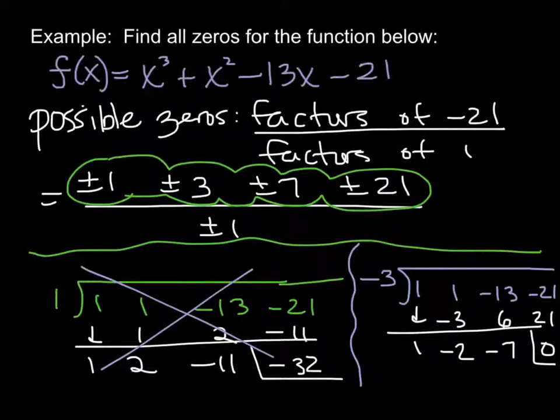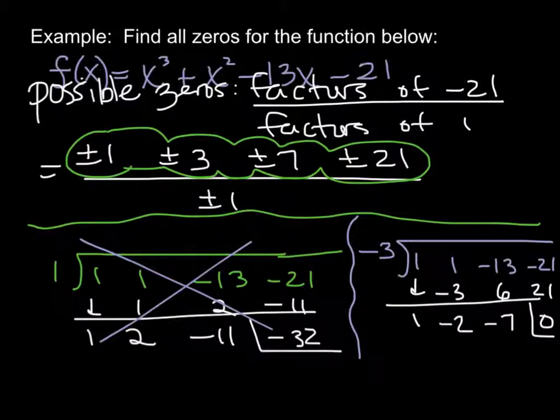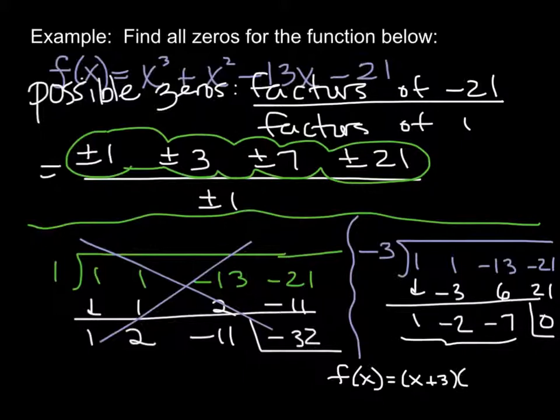So that means, I'm going to slide this up a little bit. That means that right now my function can be written as x plus 3, because if I tested a negative 3, it means x plus 3 is a factor. And then here gives me my remaining, my quotient. So that means x squared minus 2x minus 7.